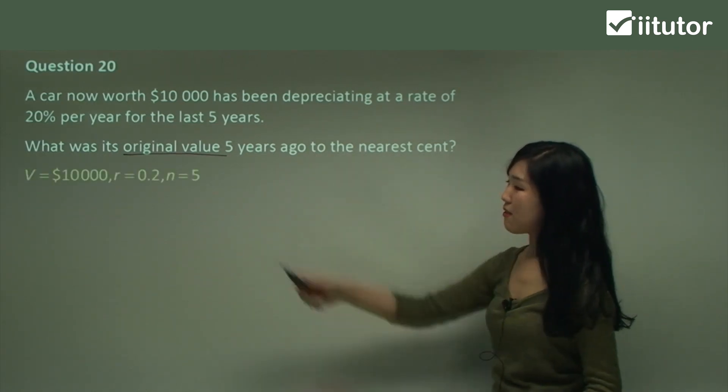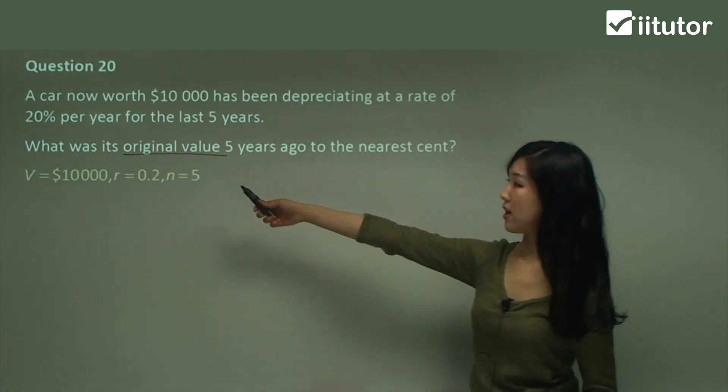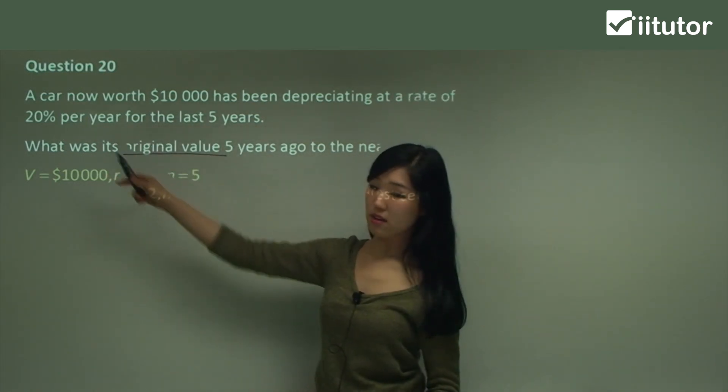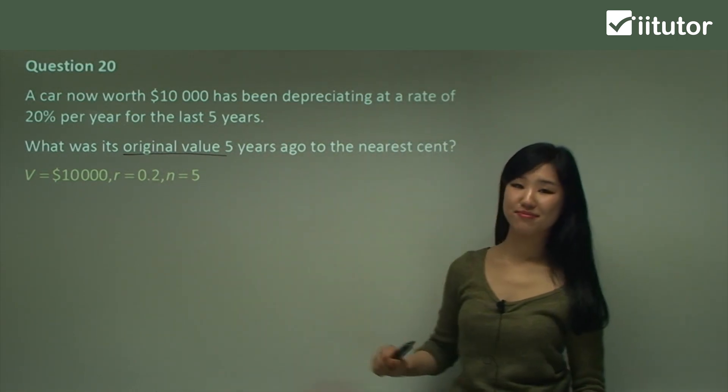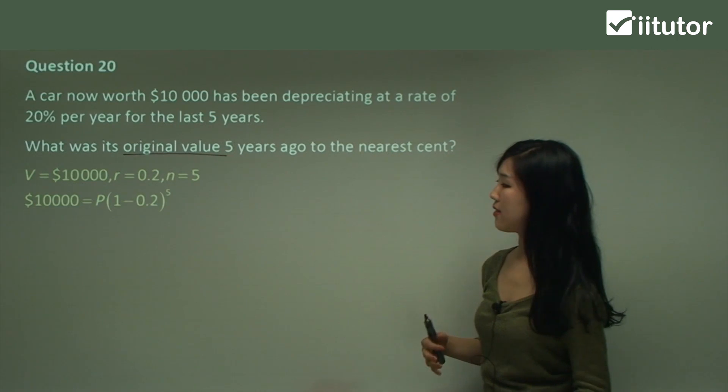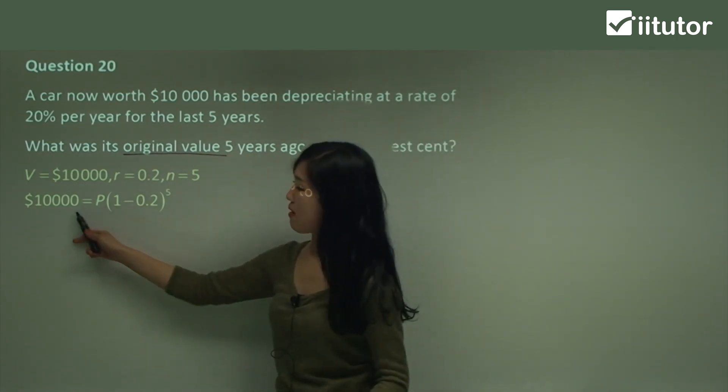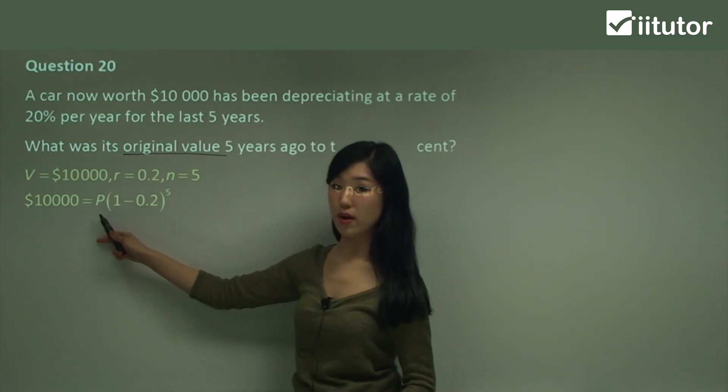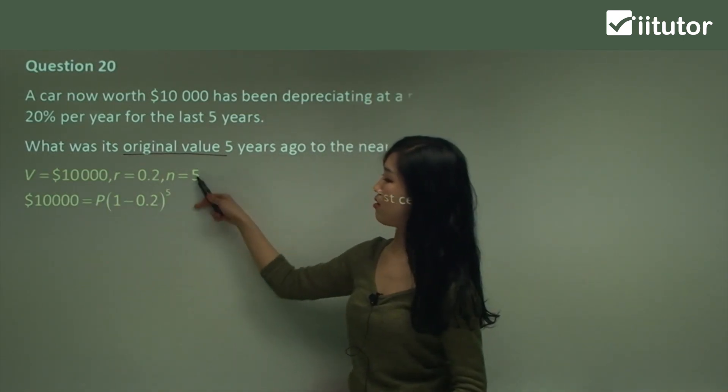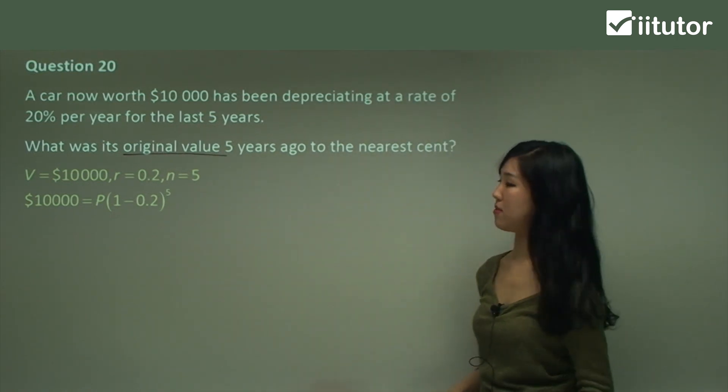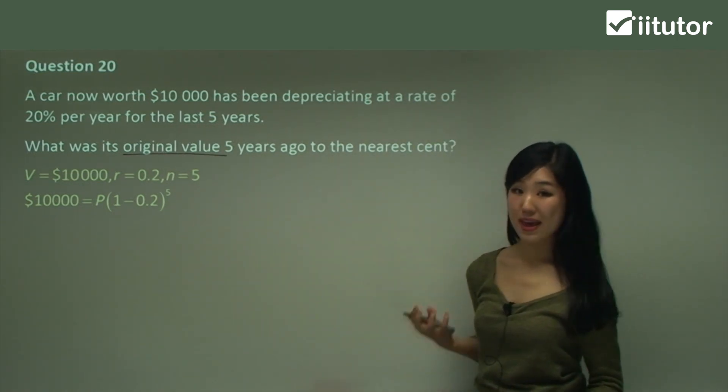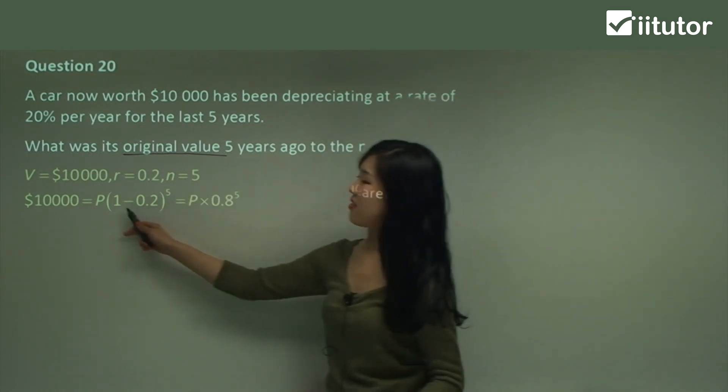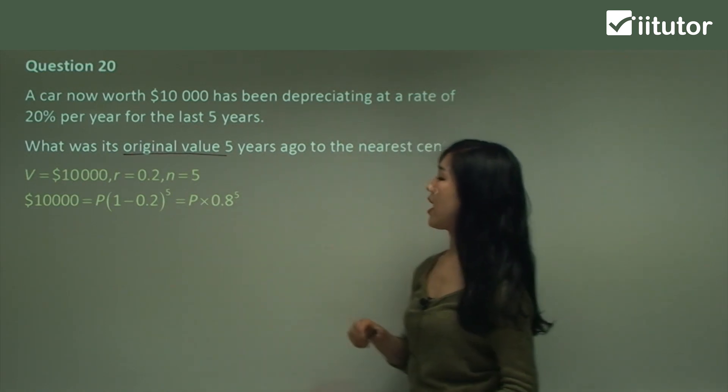So I'm going to say v, which is our future value, is going to be the value that's now, $10,000. The rate is 20%, so 0.2, n is five years. So if I put it into the formula, it's going to be v, which is $10,000 equals the principal, or the initial value—that's the one we're going to find—times 1 minus the rate to the power of five, the number of terms. So we have to find p, the initial value. So p will be, I just calculated 1 minus 0.2, which is 0.8, just simplify.